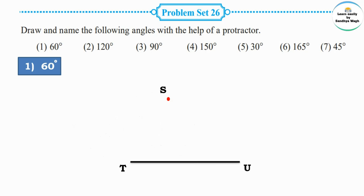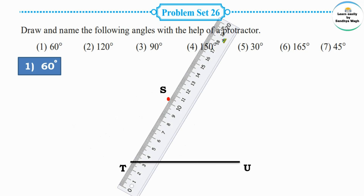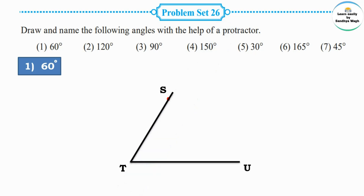Lift the protractor and draw a line with the ruler from point T through the marking point S. The angle measure is 60 degrees, and the angle is STU. T is the vertex, and the arms are TS and TU. This angle measures 60 degrees.